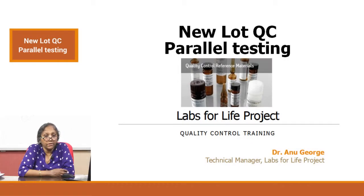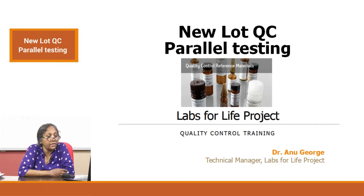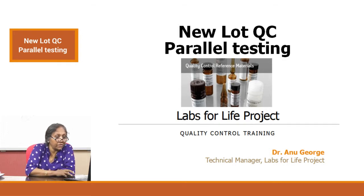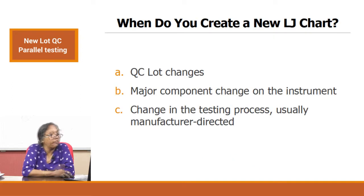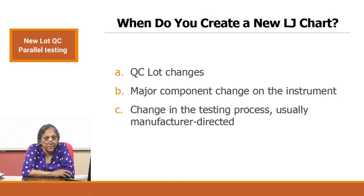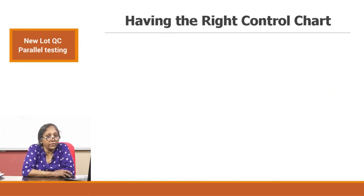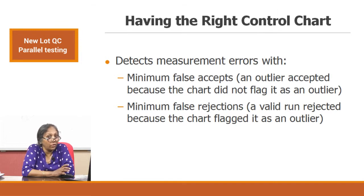In the last video, we talked about having the right chart. We also need to understand the situations where you need to create a chart and how to accomplish making the right chart. There are certain situations we discussed in the earlier video: QC lot changes, major component change on the instrument, and change in the testing process, usually manufacturer directed. In this video, we will talk about what to do when the QC lot changes.